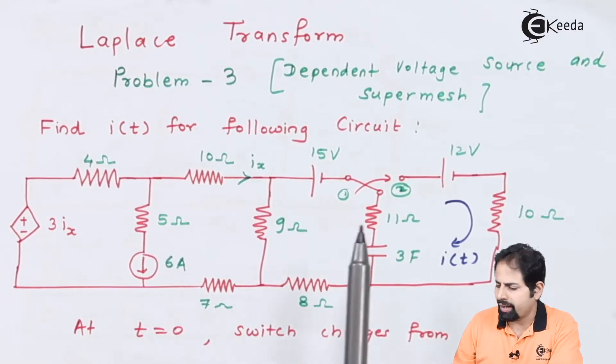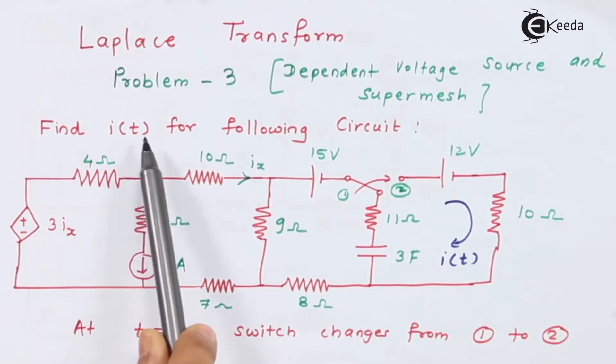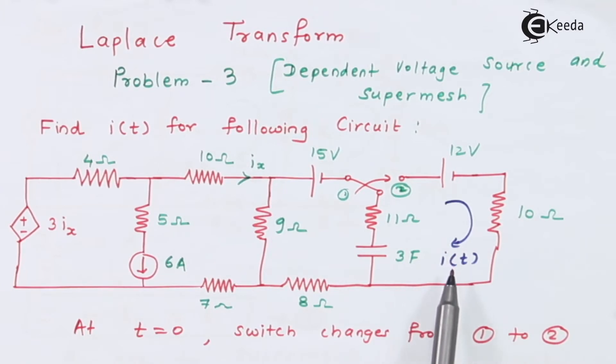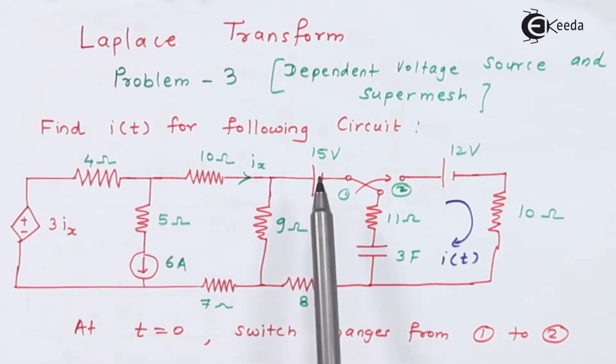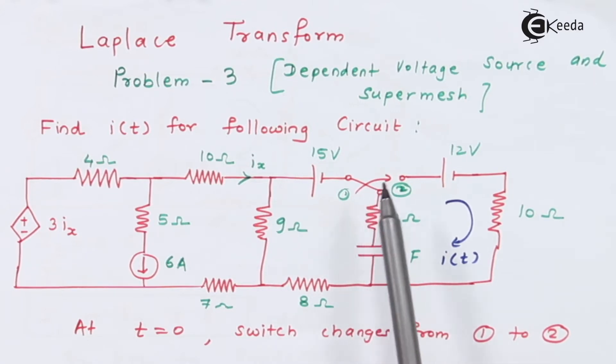Here you can see I have drawn a diagram and we are supposed to find i(t), the current which is in the last loop. There is a dependent voltage source whose value is 3 times Ix, where Ix is this current. Because there is a current source between two loops, there is a super mesh. You have this 15 volt and 12 volt source, and the switch changes from position 1 to position 2 at t equal to 0. All the values are given to us.